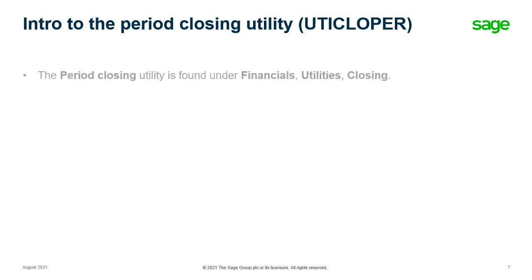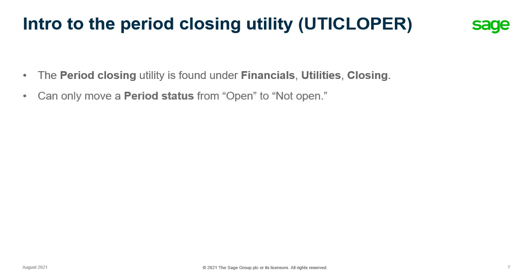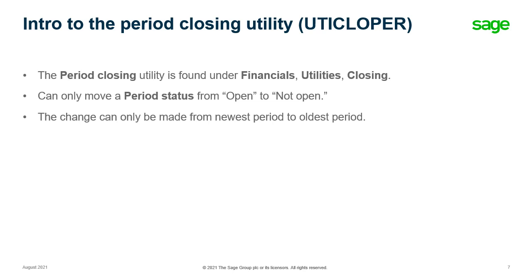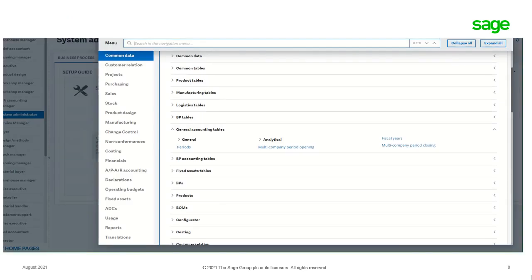Well, I'm going to look at the period closing utility. The period closing utility is found under Financials > Utilities > Closing. It can only move a period status from open to not open, and the change can only be made from newest period to oldest period. The utility can only be used if there has been no activity in the period.